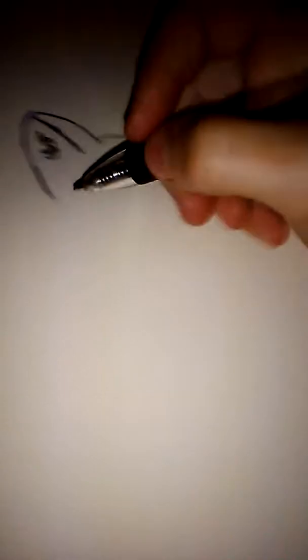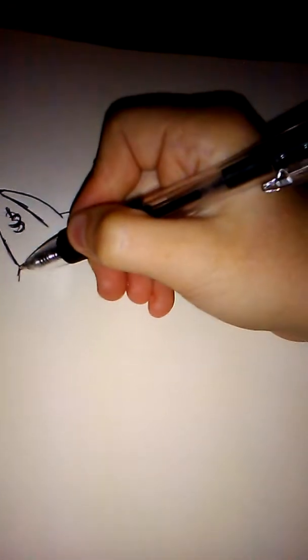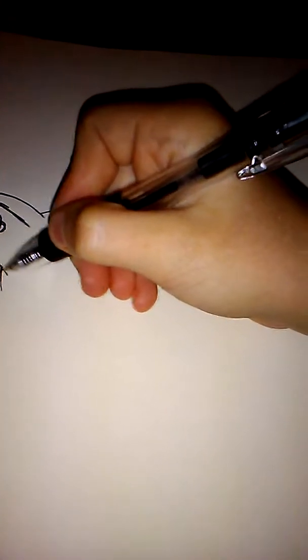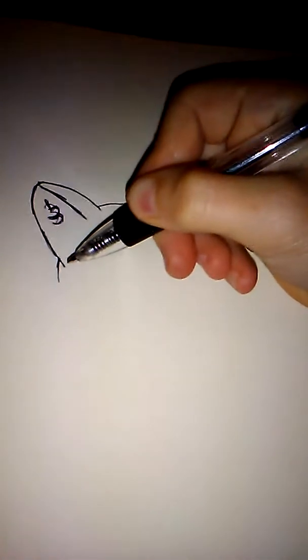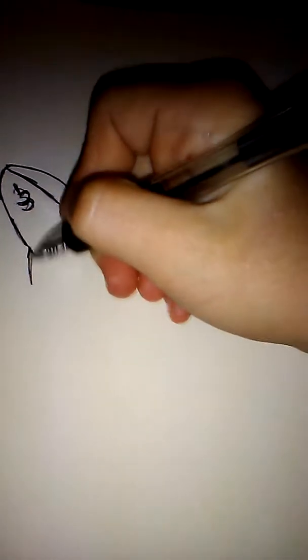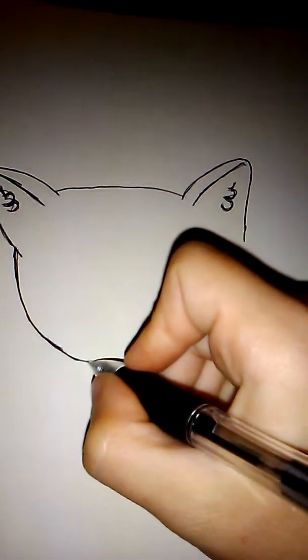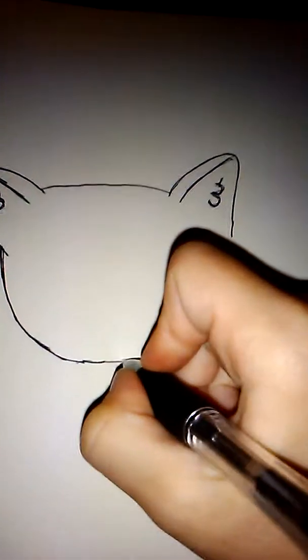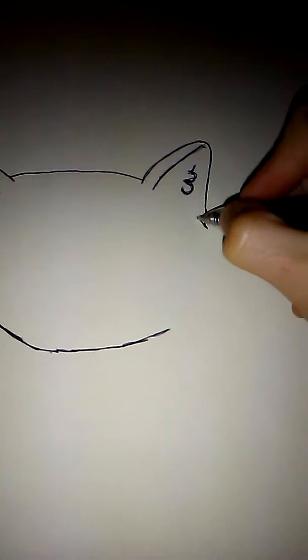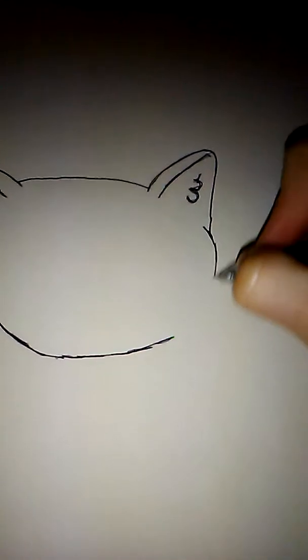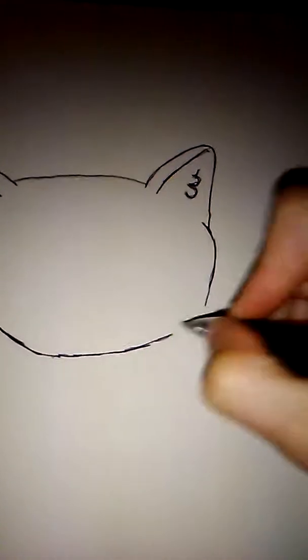Next, you're going to want to kind of go under and leave a little line right there, and then you're going to want to go in a little. Then just go all the way around and draw the head.